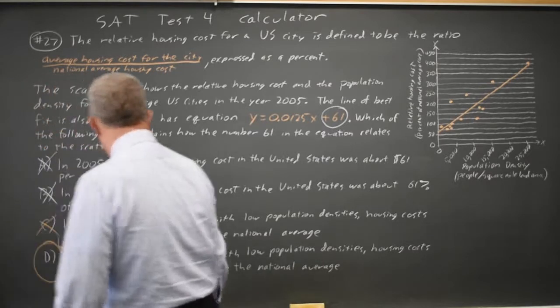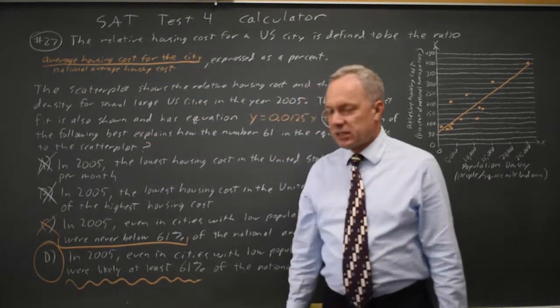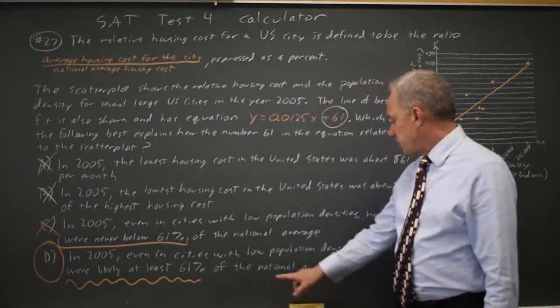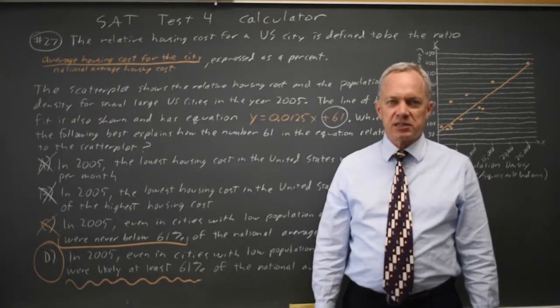The correct answer would be D: that they were likely at least 61 percent of the national average, even for low population densities.